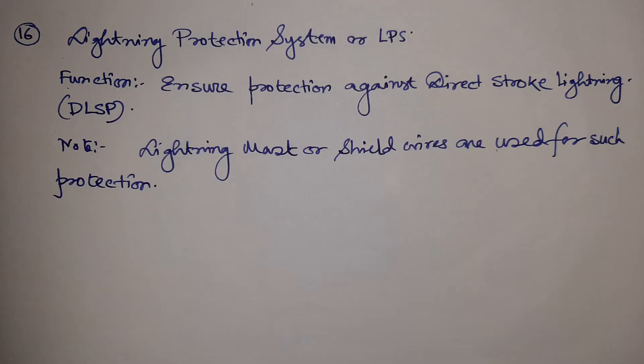Our first system is the lightning protection system. It is not an equipment but a protection system to protect the substation against direct stroke lightning. For indirect lightning there is a lightning arrestor or surge arrestor, but for direct lightning the lightning protection system has to be used. It is generally constructed by a lightning mast or shield wire, which arrests the lightning surge and sends the discharge current to the ground.